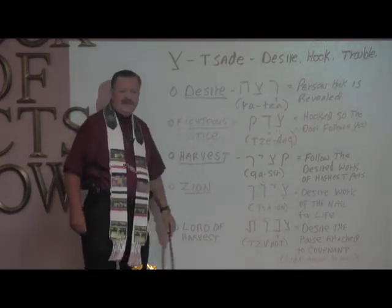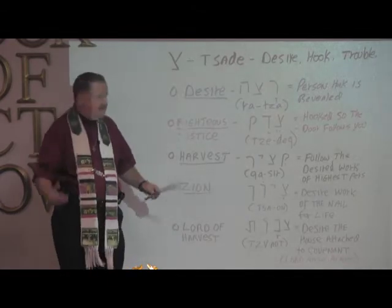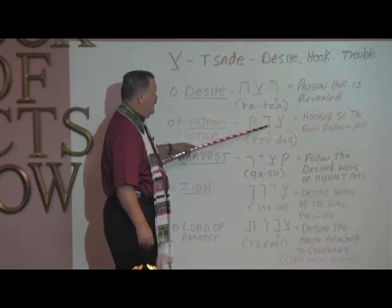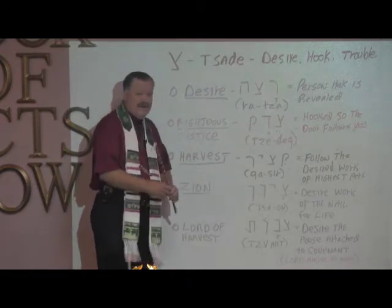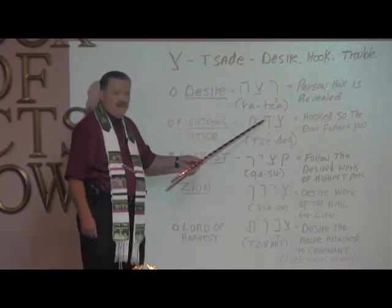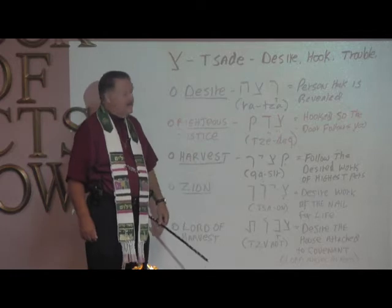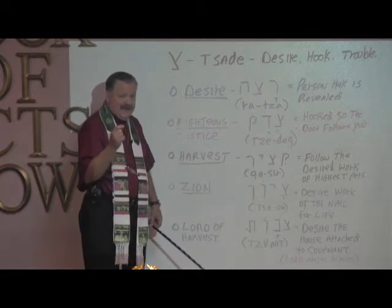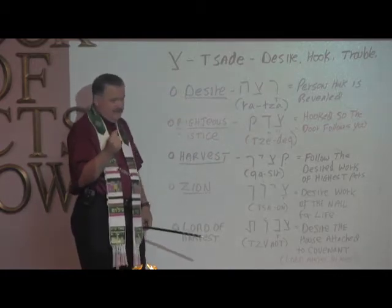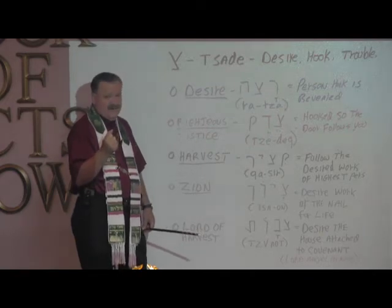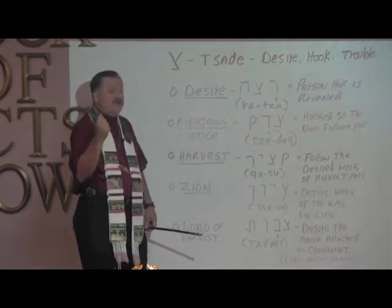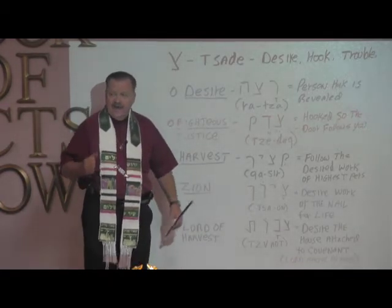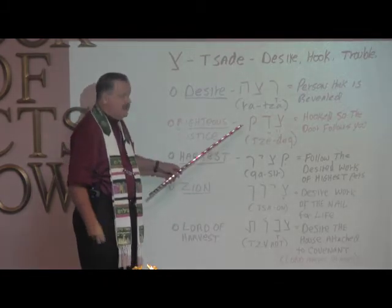What does righteousness really mean in the original Hebrew? 'Hooked so that the door of covenant follows you.' The Dalet is the place where the blood is applied — the place of covenant. If you are connected to the door, the door of covenant, then His righteousness will follow you wherever you go. It all has to do with covenant.